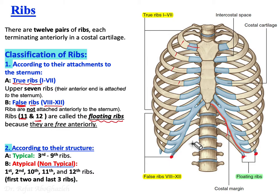Ribs 8, 9, and 10 are false ribs because they don't attach directly to the sternum — instead their costal cartilages unite with each other and then join the costal cartilage of rib seven, which does attach directly to the sternum.